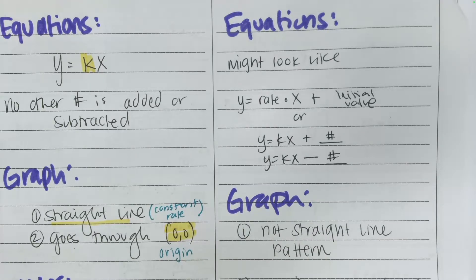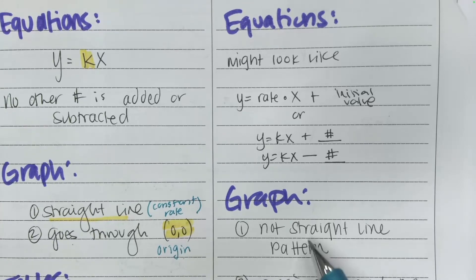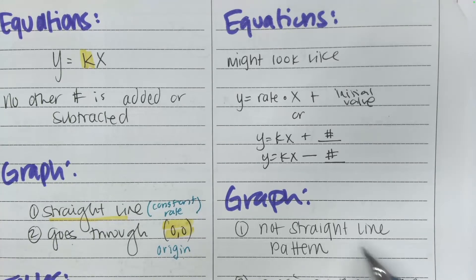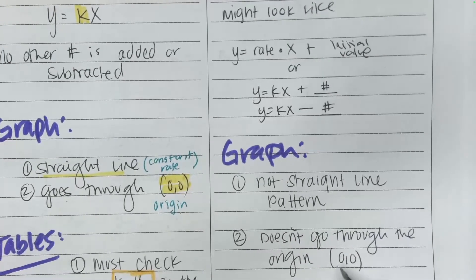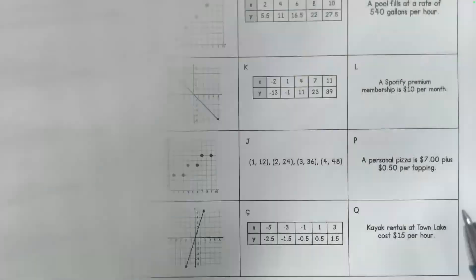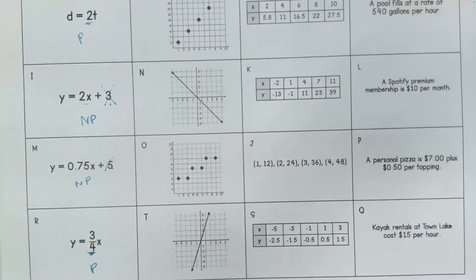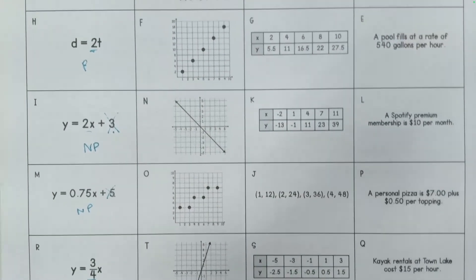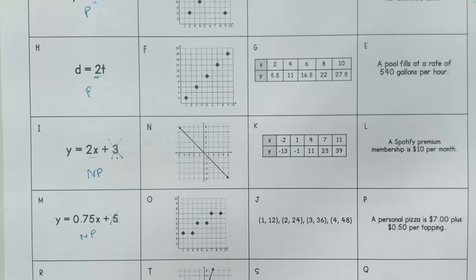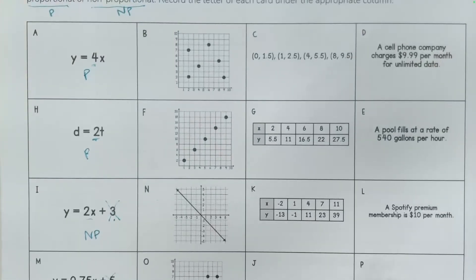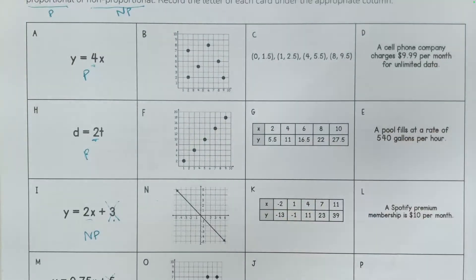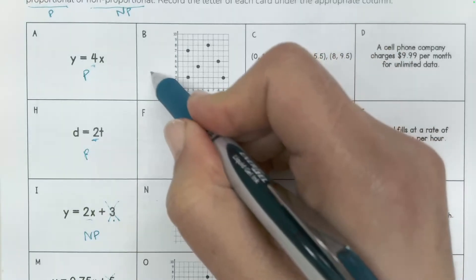When you're looking at non-proportional graphs, they could either be non-straight line patterns, something that's not straight, or it is a straight line, but it doesn't go through the origin. So for example, if we take a look at part B, those points are all over the place. So this is definitely not proportional.